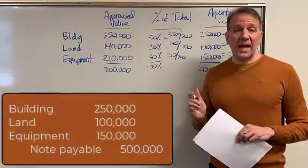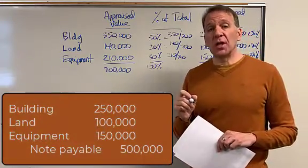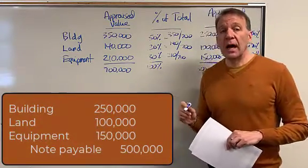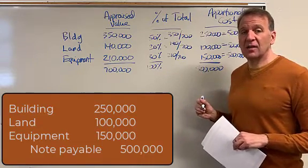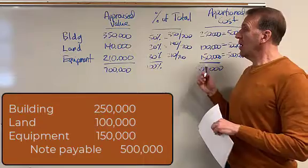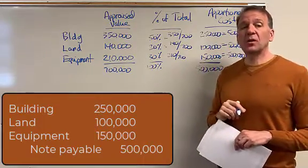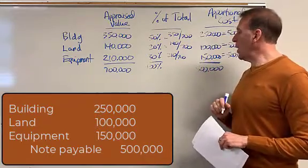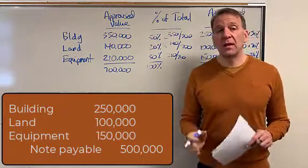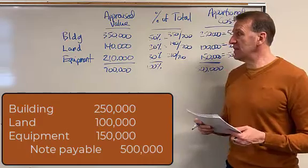And now on the screen, you can see the journal entry that would be recorded for this purchase of these assets. All right. We're going to debit our building $250,000. We're going to debit our land $100,000. We're going to debit our equipment $150,000.